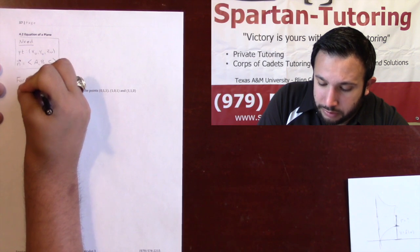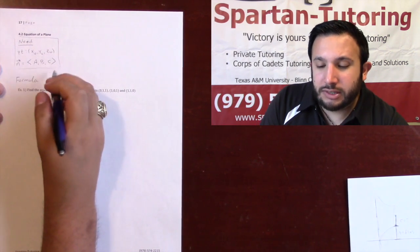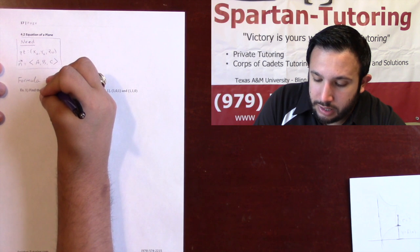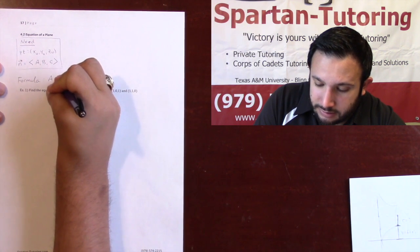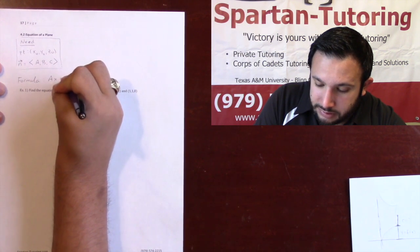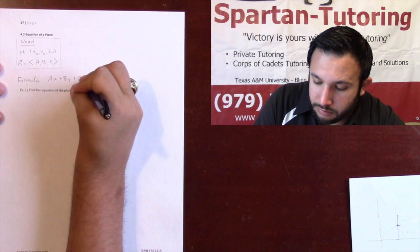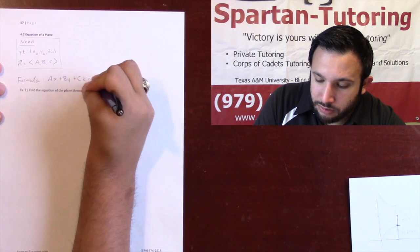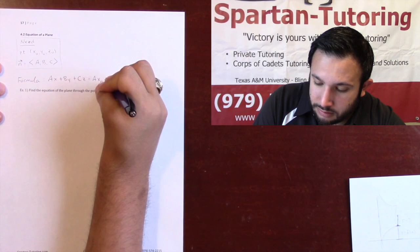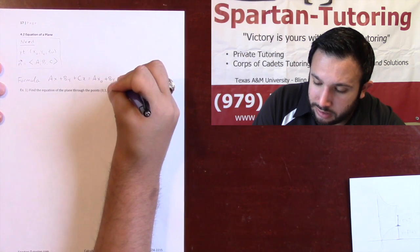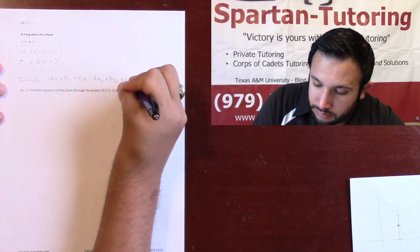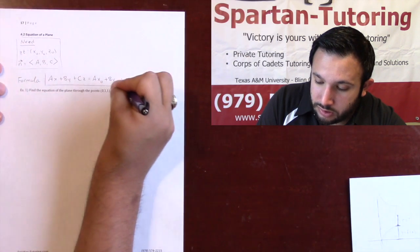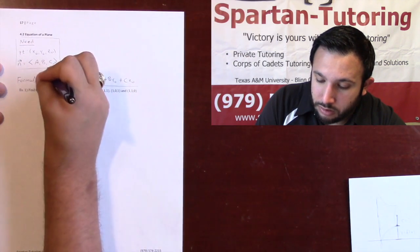Then your formula that you're going to use, once you have these things, the equation of a plane is going to be a times x plus b times y plus c times z, is equal to a times x0 plus b times y0 plus c times z0. And this would be the equation of your plane.